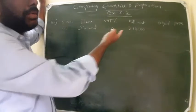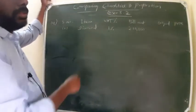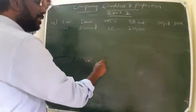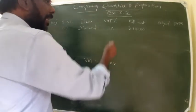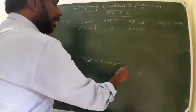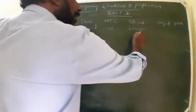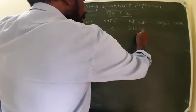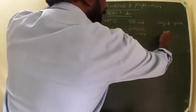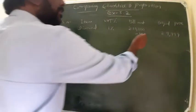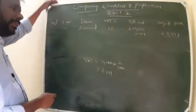This 1% VAT we have to deduct from the 10,100. How to deduct? First VAT we have to find. VAT means 10,100 into 1%, that is 1 by 100. So Rs. 101. So you subtract 101 from this, you will get original price Rs. 9999.